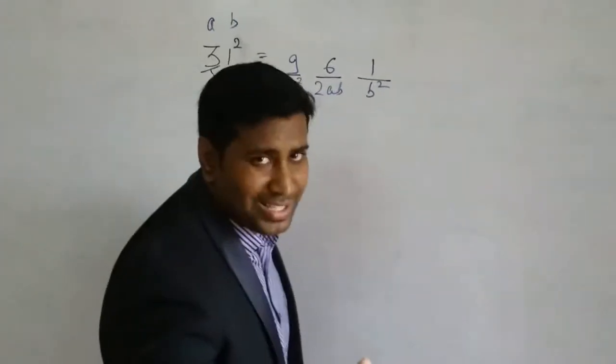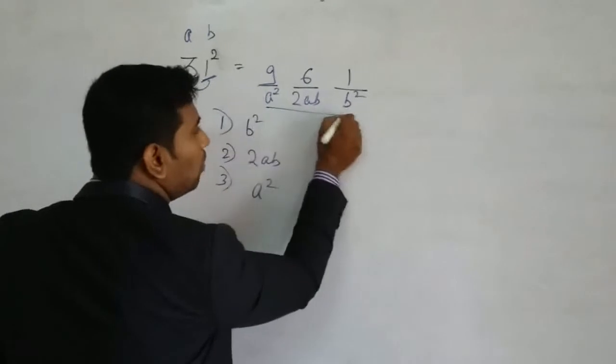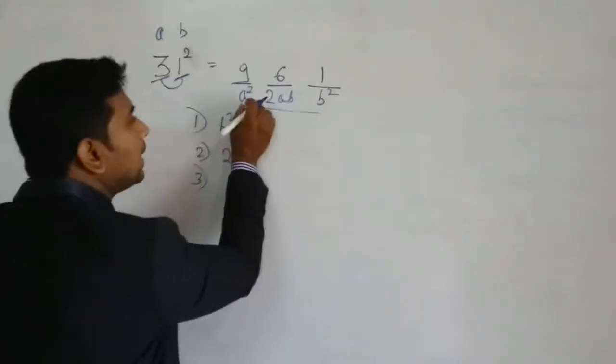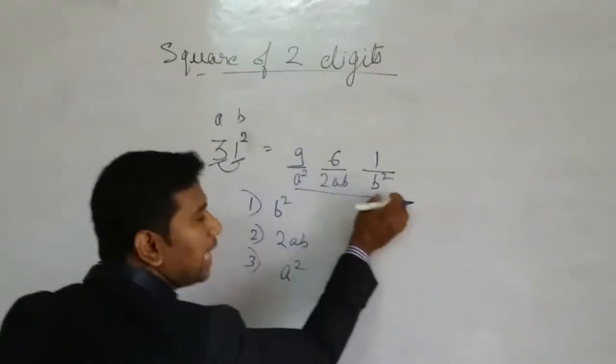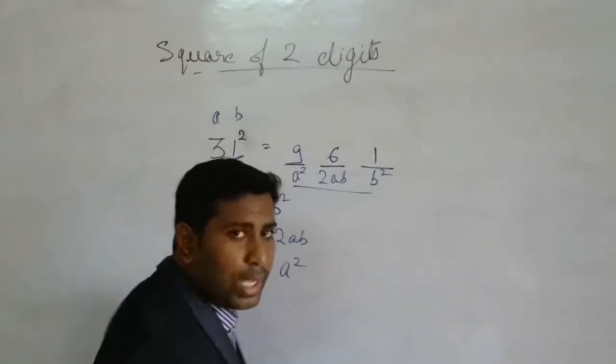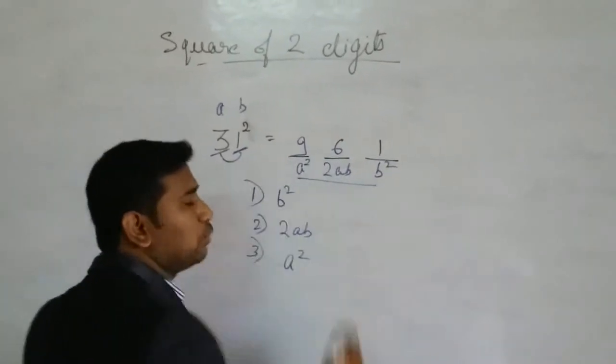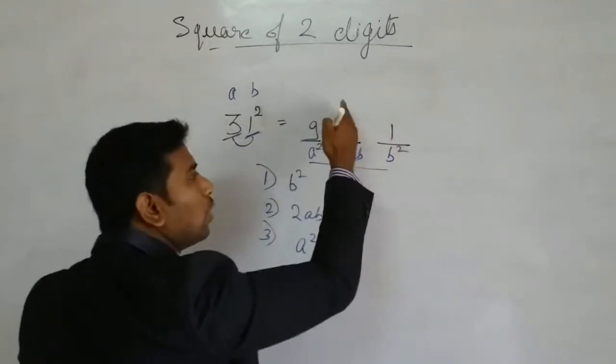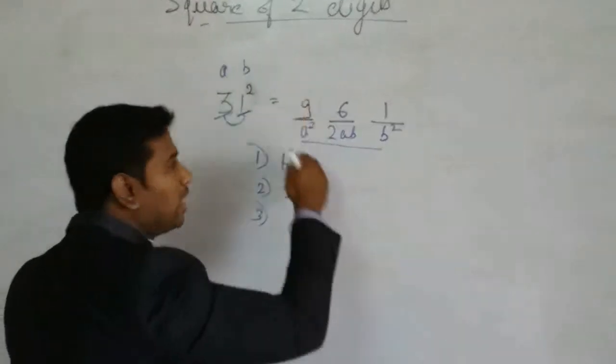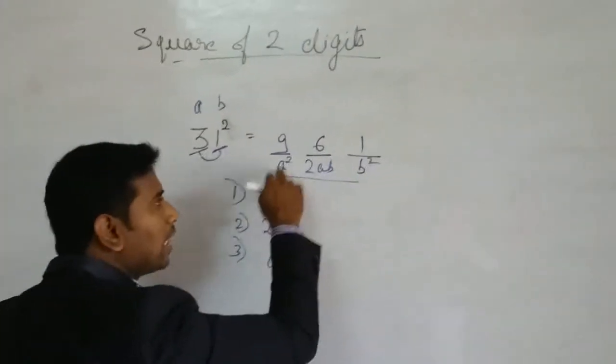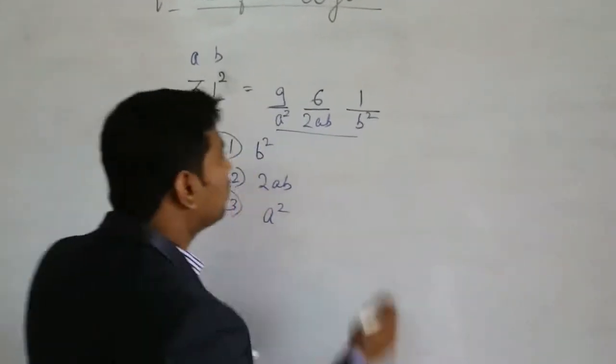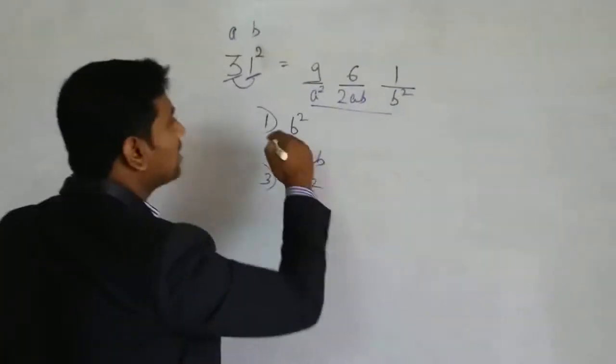A plus b whole square. But here we are not using plus here. Only a plus b whole square. What is the formula? A square plus 2ab plus b square. But we are not writing any plus here. We are just writing it continuously. A square, 2ab and b square. But remember my difference. Start it with right side. Don't start with left side. Why? Because if you start with the right side, if you are getting any carry, then you can forward to move into next, you can give the carry to next digit. But if you start with left side digit, you cannot give your carry to the previous digit. That is why we are going to start with the right side.